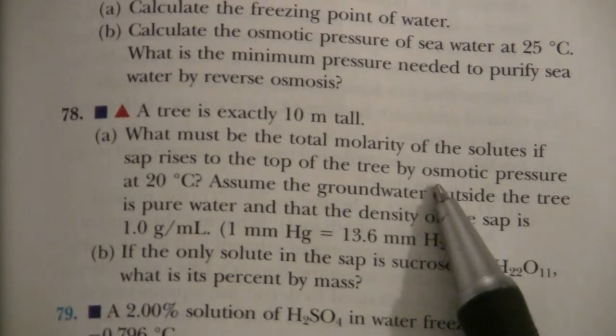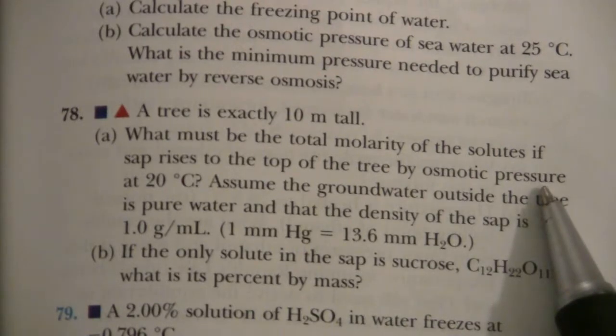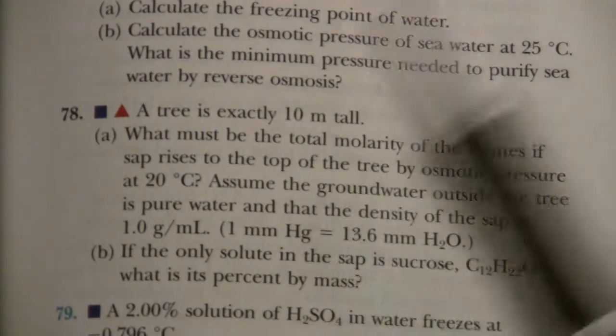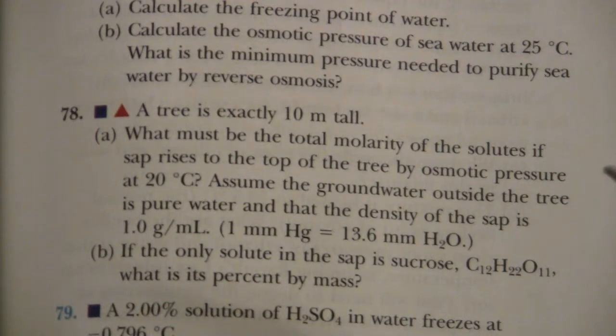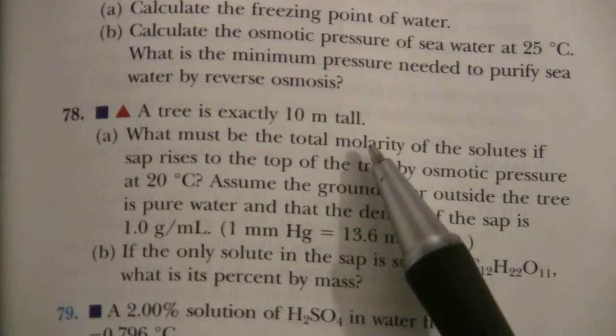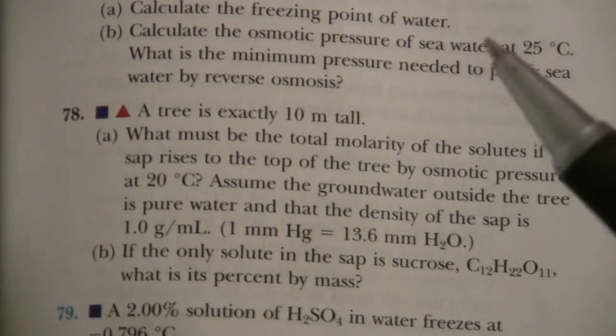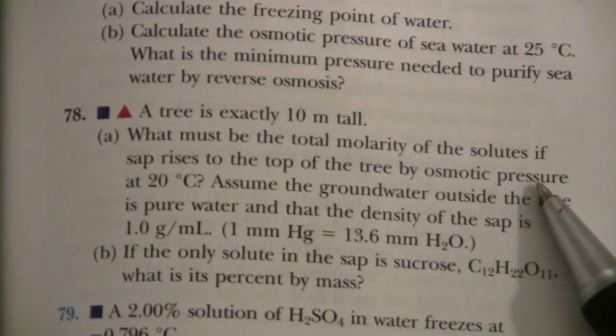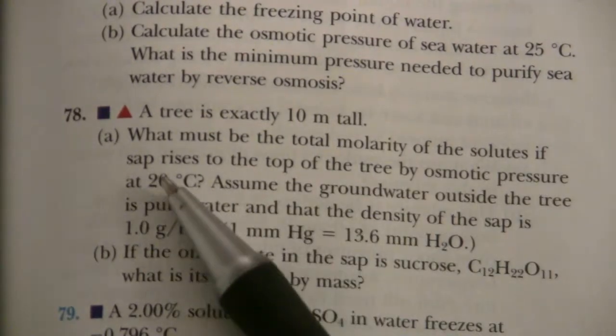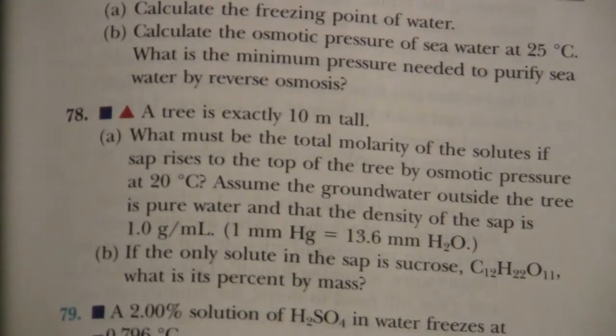First of all, this is an osmotic pressure problem. So the equation we're thinking of is π = CRT. And we want to find the molarity, that's the C. And that means we need to find the osmotic pressure, π. We have the temperature and of course we have R.